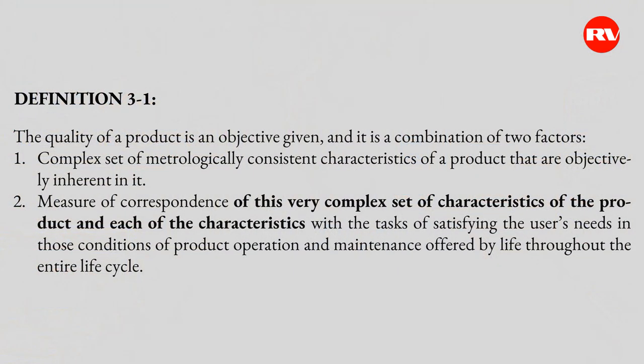The definition of quality of a product: the quality of a product is an objective given and it is a combination of two factors. The first factor is a complex set of metrologically consistent characteristics of a product that are objectively inherent in it. The second factor is a measure of correspondence of this complex set of characteristics with the tasks of satisfying the user's needs, in those conditions of product operation and maintenance offered by life throughout the entire life cycle.